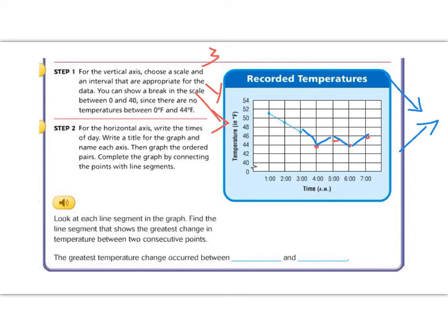So if we look at the change here from 2 o'clock to 3 o'clock that's only a slight change, but now look here from 3 o'clock to 4 o'clock we went from 47 to 44. That's a three point change and that is the biggest area of our drop. So we could say that the greatest temperature change happened between 3 o'clock and 4 o'clock.